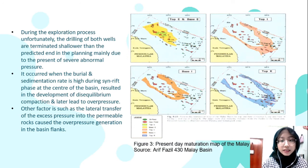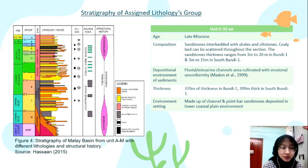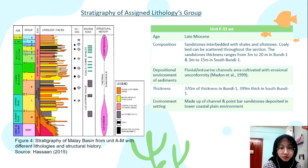On the right side are examples of groups that exist in the Malay Basin, such as top E, base E, top I, base I, and top T. The stratigraphy of the Malay Basin ranges from unit A to M with different lithologies and structural history. Our group has been assigned unit E32 sandstone, of late Miocene age, composed of sandstone interbedded with shales and siltstone. The depositional environment is fluvial or estuarine channels with erosional unconformity. Thickness is 370 metres in Bundyfield and 399 metres in South Bundyfield.